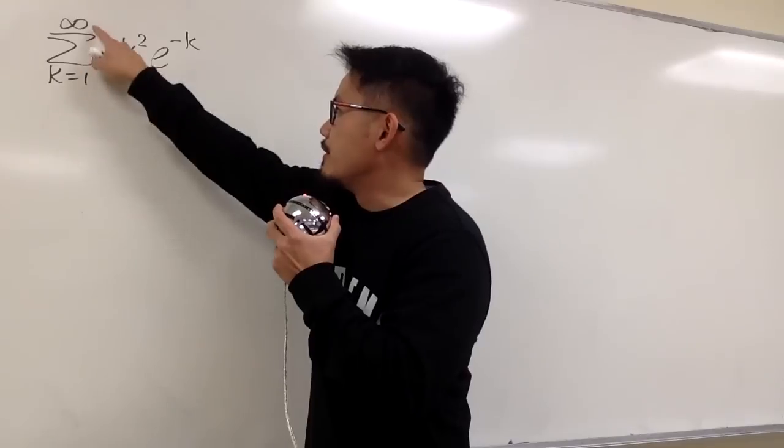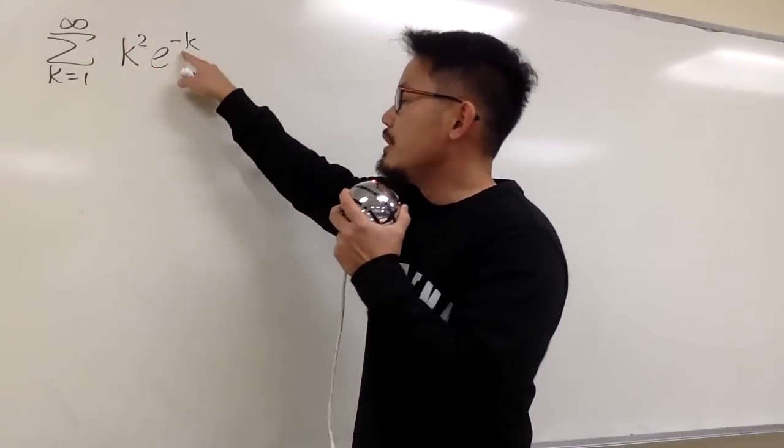Converge or diverge, sigma when k goes from 1 to infinity, k squared times e to the negative k power.